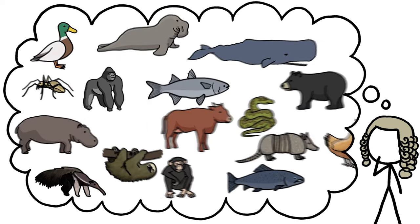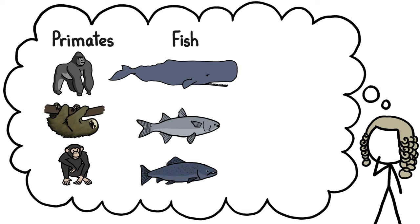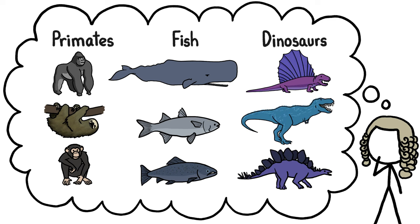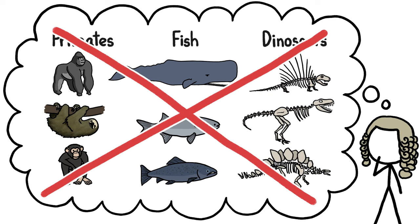For centuries, as we tried to make sense of the diversity of life on Earth, we created animal families according to looks alone. And dinosaurs were basically anything that was big and scary and scaly and dead. But that doesn't actually make a lot of sense.